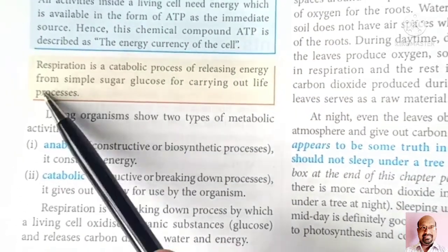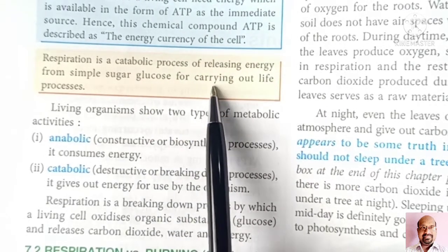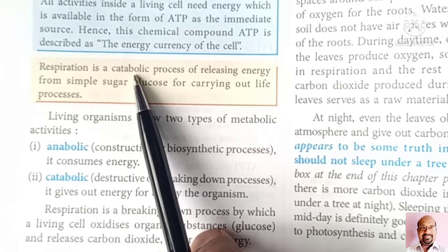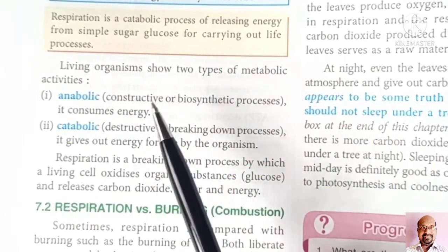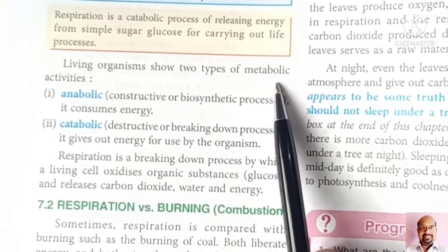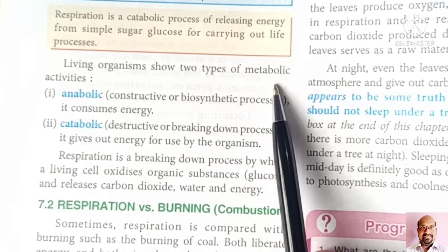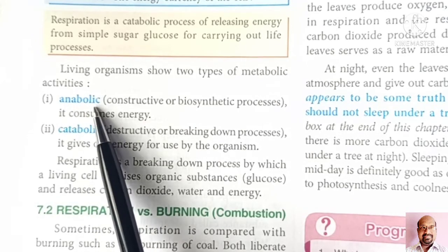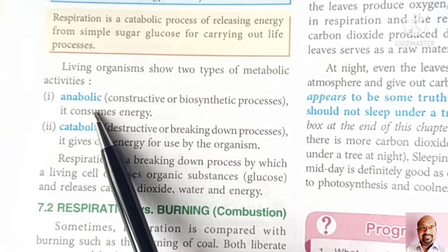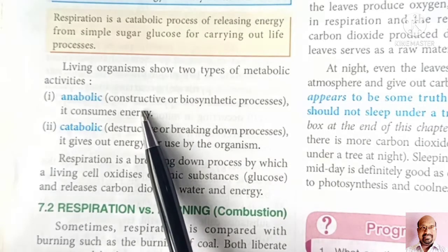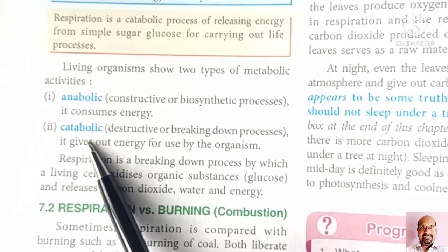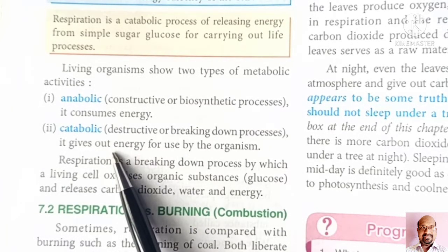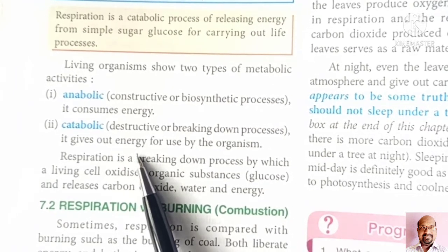Respiration is a catabolic process of releasing energy from simple sugar glucose for carrying out life processes. To understand catabolic processes, we should know that all living cells perform metabolic activities. These metabolic reactions are a combination of two different types: anabolic and catabolic. Anabolic reactions are biosynthetic or constructive reactions — they synthesize food. Whereas catabolic reactions are breaking-down or destructive reactions — they break down food molecules into smaller, absorbable molecules to liberate energy required by the plants.